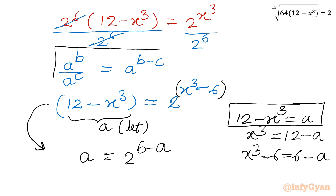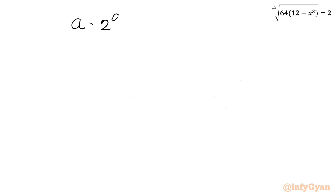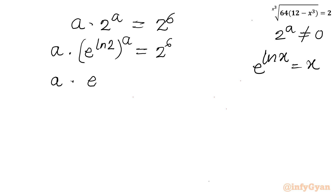Now I will use the same property of exponents on the RHS. I can write it as 2⁶ over 2^a, and the left side is a. Now I can cross-multiply since 2^a cannot be 0, giving: a times 2^a equals 2⁶. Now using the exponent law e^(ln x) = x, I can write 2 as e^(ln 2), so the equation becomes: a times e^(a·ln 2) equals 2⁶, which is 64.